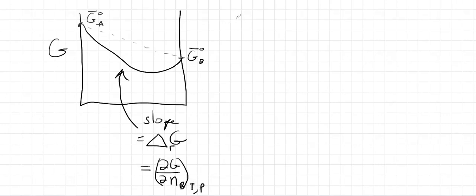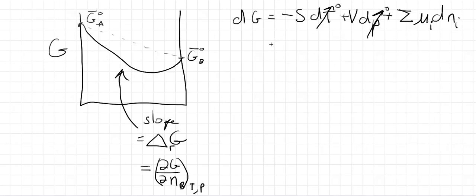Let's go ahead and write what DG is in general. DG we know is equal to minus S dT plus V dP plus a term for the chemical potentials and changes of the number of moles for all the different things that are reacting in our system. And because we're working at constant temperature and pressure, we don't have to worry about these terms. And we've only got two components. So let's write this out explicitly as mu A change in moles of A, mu B change in moles of B.